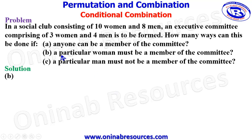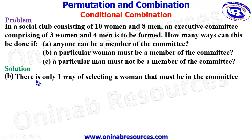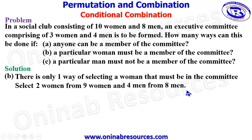For B, a particular woman must be a member of the committee, which means we select that one particular woman as a member. At that point, there will be 9 women remaining, and from these 9 women we will only be selecting 2, because we have already identified 1 of the 3 required women. So we select 2 from the remaining 9 women and then select 4 from 8 men.